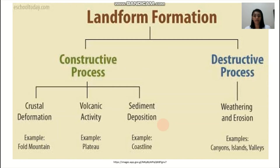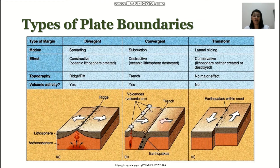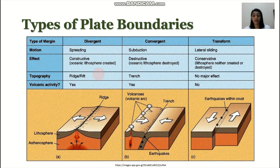We'll highlight now more of the crustal deformation, which involves different types of plate boundaries. There are three general types: divergent, convergent, and transform plate boundaries. For divergent plate boundaries, the motion is spreading — there is separation of the plates. This can happen in oceanic crusts or in continental crust. The effect is constructive, meaning oceanic lithosphere is created, and it also causes some volcanic activity. Landforms formed at divergent plate boundaries are rift valleys if it occurs on land, or mid-oceanic ridges if it's under the sea.